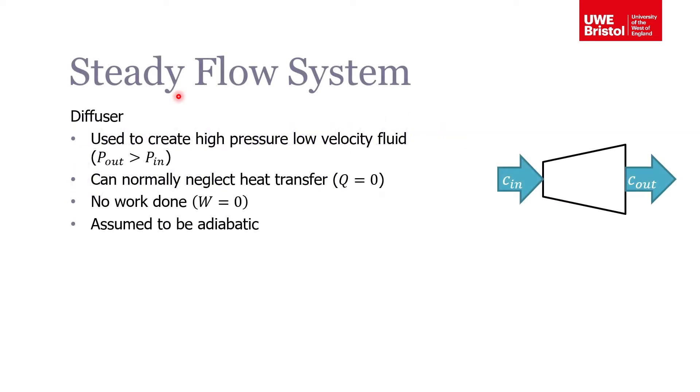The first one I'm going to look at is what's called a diffuser. You can see this is a device where its cross-sectional area increases with downstream distance. The fluid's coming in at the inlet and leaving at another velocity, which would be a slower velocity because this thing is increasing in area. The purpose of this device is to create high pressure, low velocity fluid at the outlet. Although the velocity at the outlet will be lower, its static pressure will be higher.